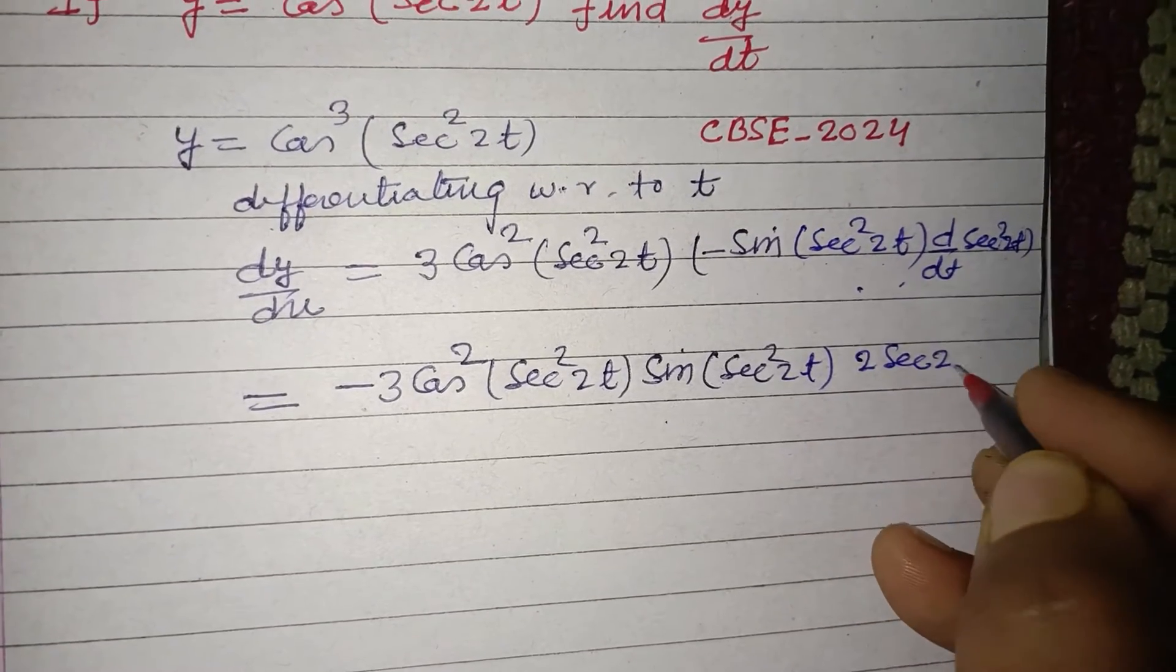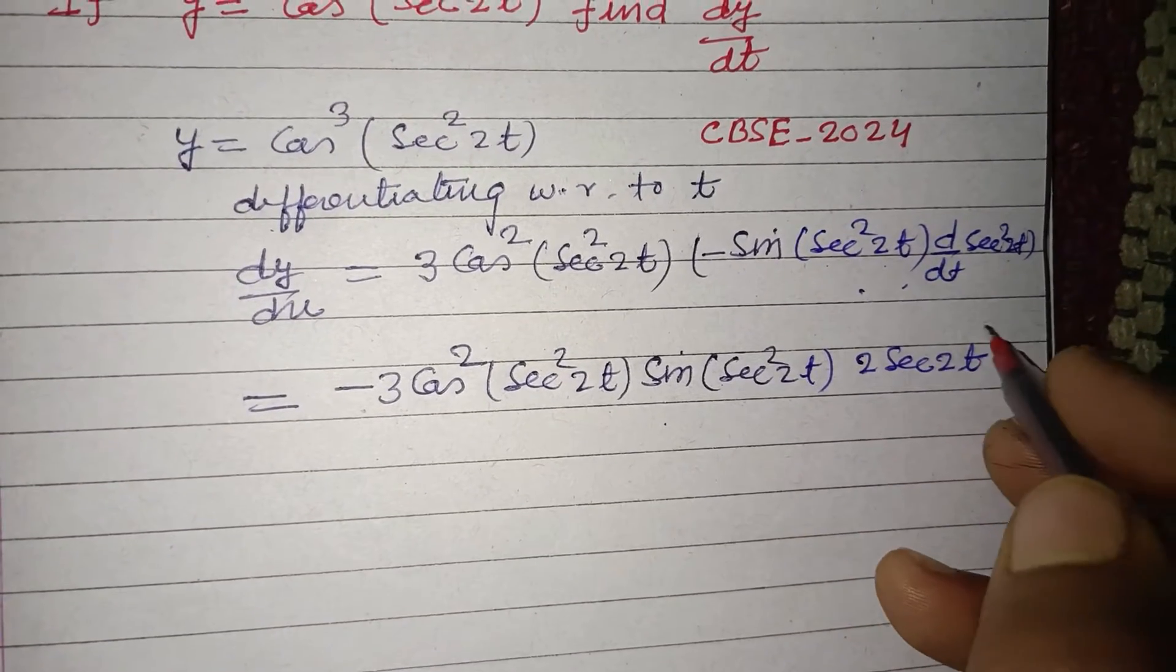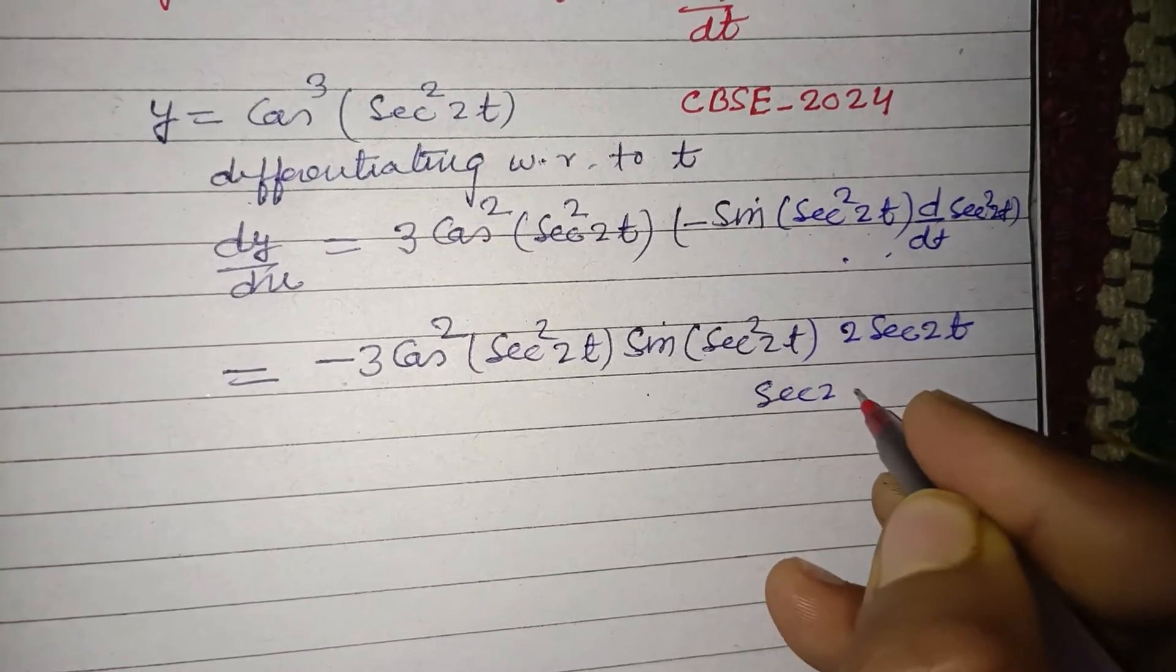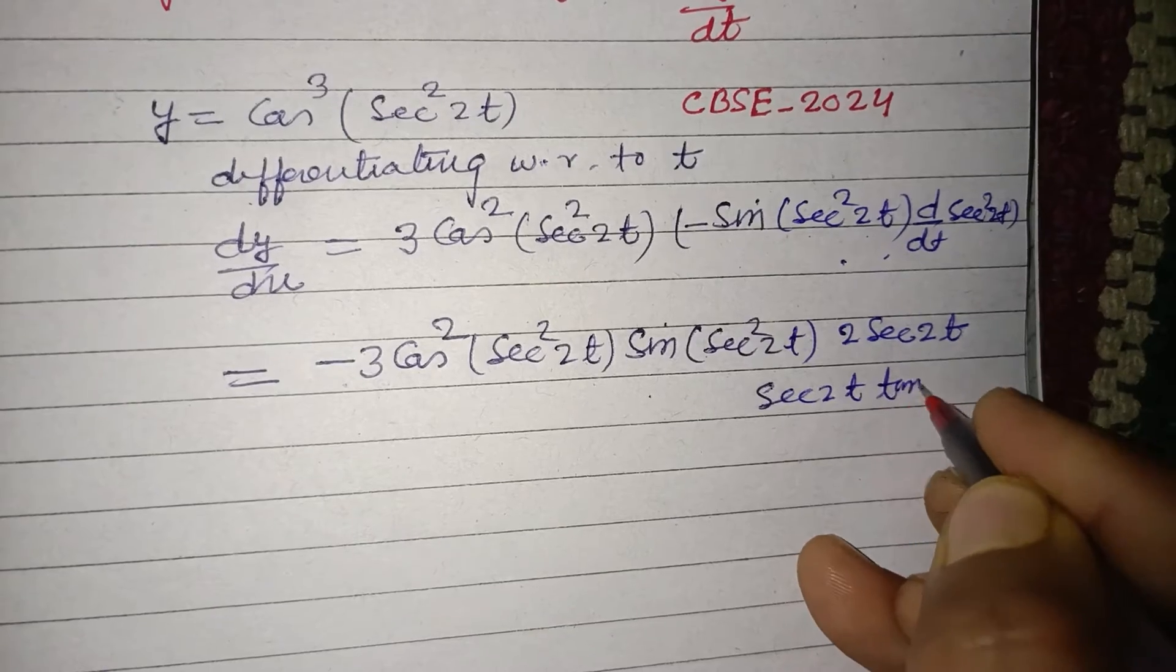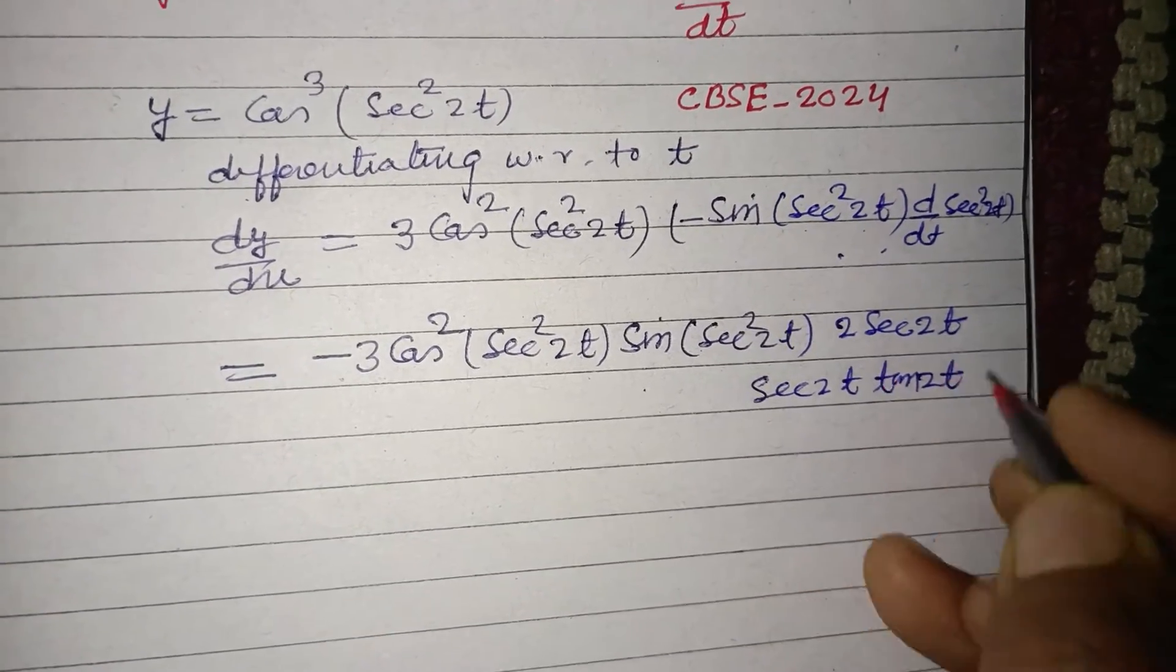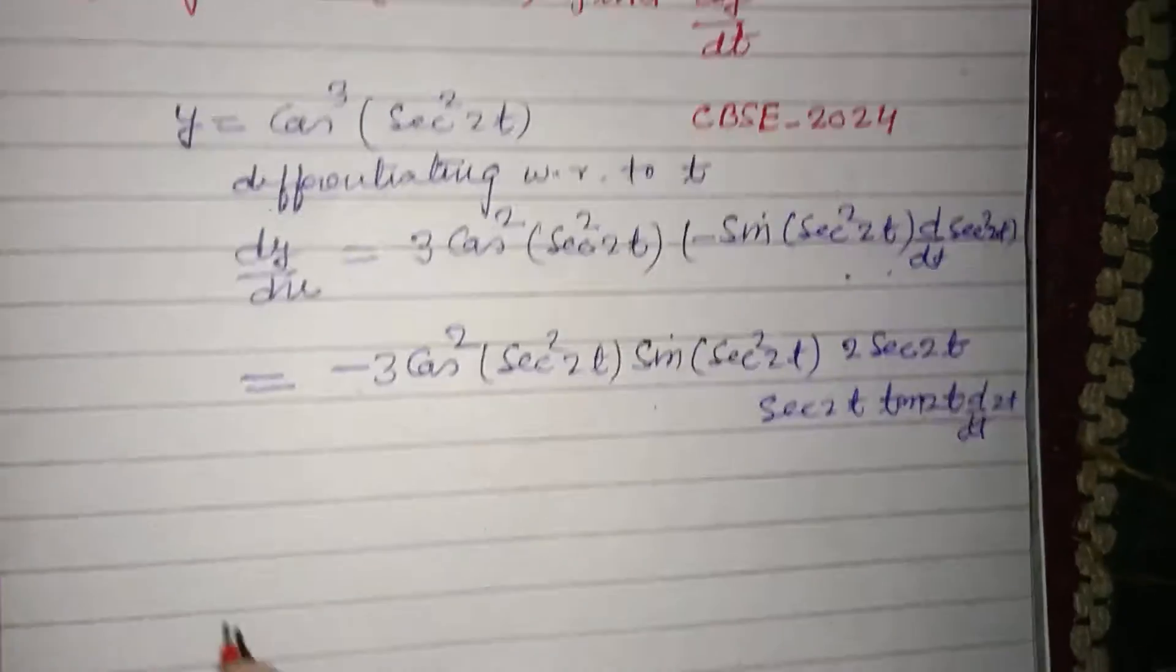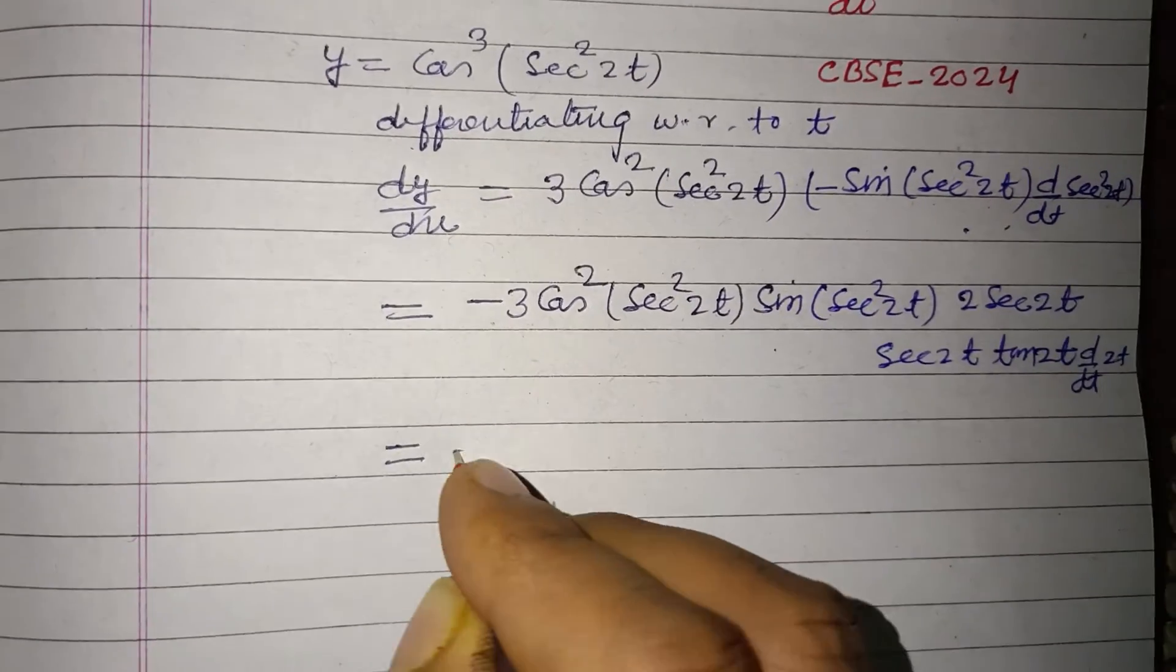So only 3 cos²(sec(2t)) into sine(sec²(2t)) into 2 sec(2t) and sec(2t) tan(2t).